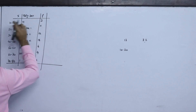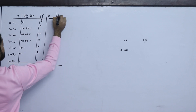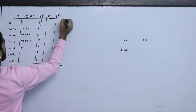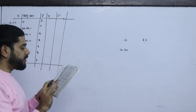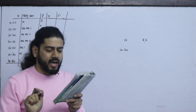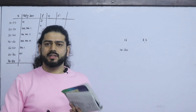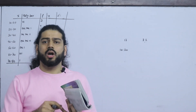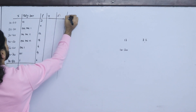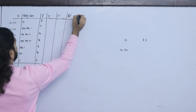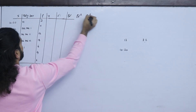Now we are going to the class interval, mid value, and D dash. Comment on the nature of distribution of customer waiting time. The nature of distribution means skewness, kurtosis, and region. So if we want D dash values, we calculate D dash for each class.